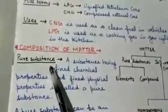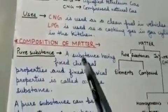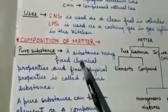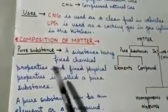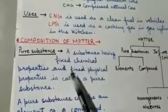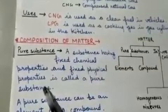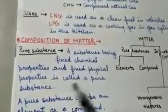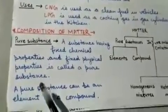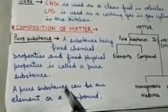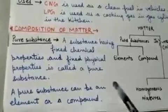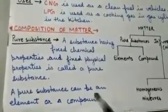A pure substance is a substance having fixed chemical properties and fixed physical properties. A pure substance can be an element or a compound.